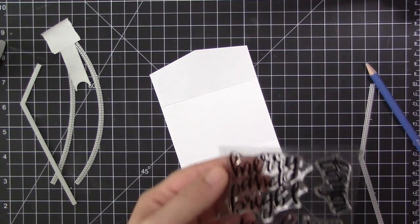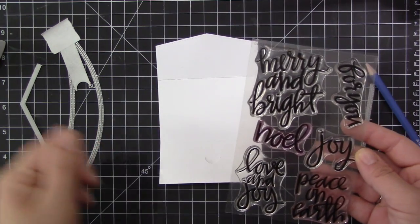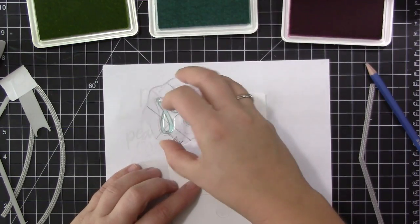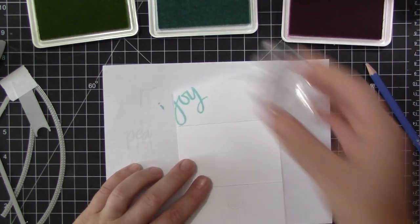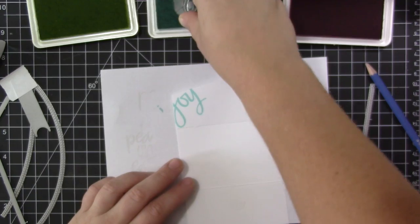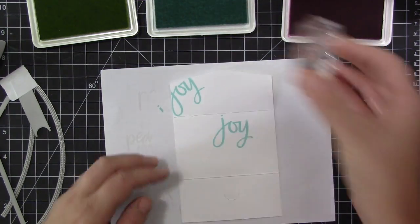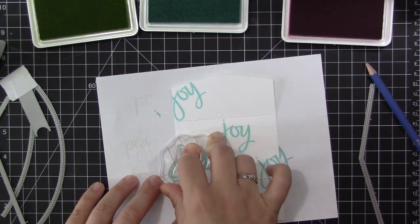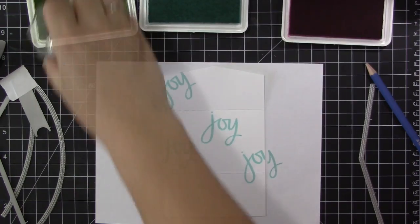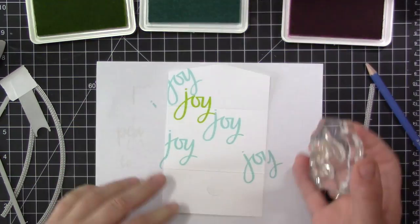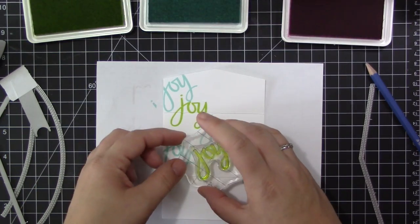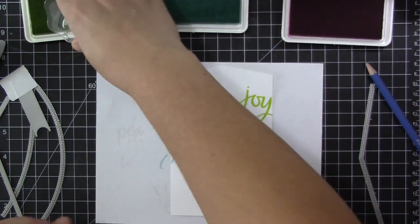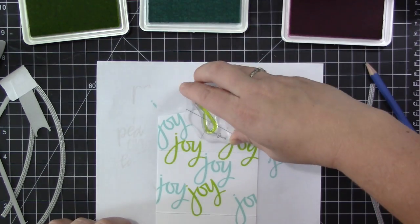Before we do any gluing, I want to do some stamping on the inside. I thought it would be fun for the recipient when they opened the gift card holder to have a fun display of bright stamping inside. I'm using the Hand Lettered Christmas stamp set and taking the word 'joy' and stamping it repeatedly on the inside of this panel. I'm starting off with Summer Splash ink, then Limelight ink, and then Ripe Raspberry ink. These don't tend to be normal colors that people would use at Christmas time, but I really love non-traditional Christmas colors.